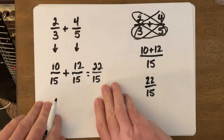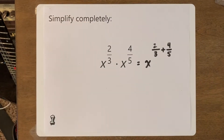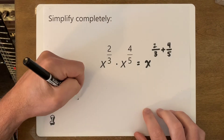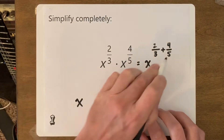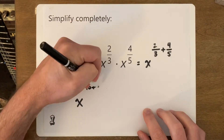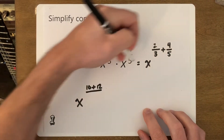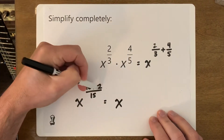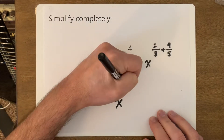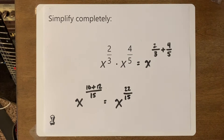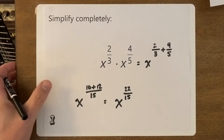Getting back to our problem, we want to add two-thirds and four-fifths. Using the butterfly method: x to the five times two is 10, plus four times three is 12, over five times three is 15 — that gives us x to the 22 over 15. And that's it. If you know a different way to add fractions, that's fine, but that's the basic approach.